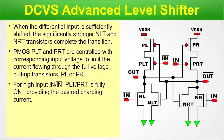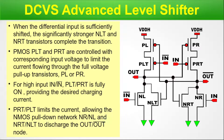For high input IN or IN_bar, PLT or PRT is fully ON, providing the desired charging current. PRT or PLT limits the current, allowing the NMOS pull-down network NR, NL, NRT, and NLT to discharge the OUT and OUT_bar nodes.